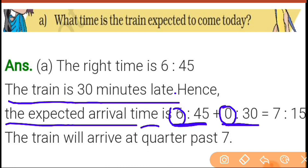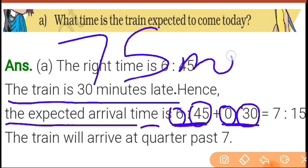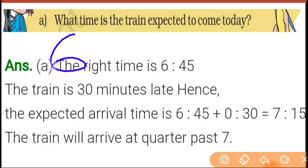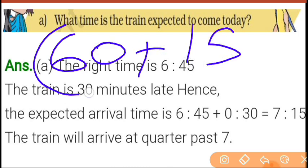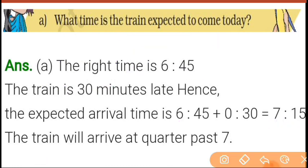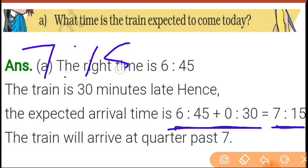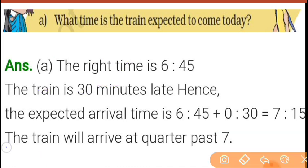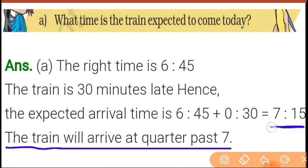The train is 30 minutes late, so the expected arrival time is 6:45 plus 30 minutes. In the minute position: 45 plus 30 equals 75 minutes. Since 75 minutes equals 60 minutes plus 15, that means 1 extra hour, making it 7 hours and 15 minutes — that is 7:15, or quarter past 7. The train will arrive at quarter past 7.